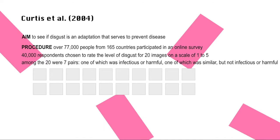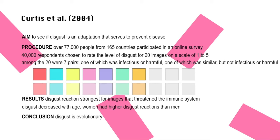The findings of Fessler et al. are supported by another study conducted by Curtis et al. in 2004. The aim was to test the hypothesis that disgust is an adaptation that serves to prevent disease. Over 77,000 people from 165 countries participated in an online survey placed on the BBC Science website, and among them, 40,000 respondents were chosen to rate the level of disgust for 20 images on a scale of 1 to 5. Among the 20 images, there were 7 pairs — one image was infectious or harmful, and the other was similar but not infectious or harmful. For example, one image was of a bodily fluid and the other was of a blue viscous liquid.